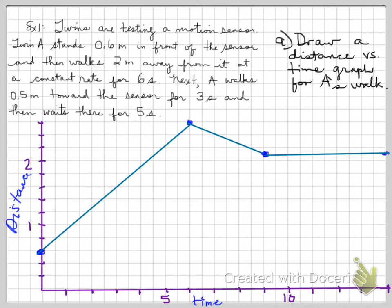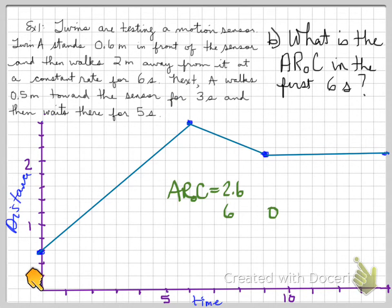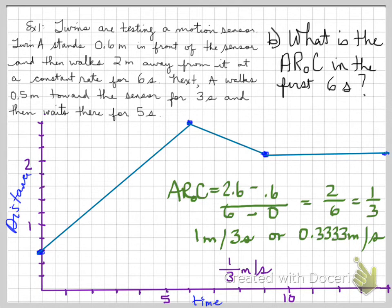For part B: what is the average rate of change in the first 6 seconds? The average rate of change uses the points: at 6 seconds the distance is 2.6, and at 0 seconds it's 0.6. Subtracting gives 2 over 6, which is one-third. This can be read as one-third of a meter per second, one meter for every 3 seconds, or 0.33 meters per second — all three answers are correct, depending on how we express the unit.